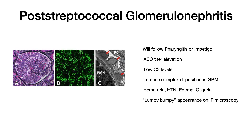Post-streptococcal glomerulonephritis (PSGN) occurs after a Strep pyogenes infection — following either strep pharyngitis or strep impetigo. Labs will show ASO titer elevations and low C3 levels. On immunofluorescent microscopy, you'll see immune complex deposition in the glomerular basement membrane with a classic 'lumpy bumpy' appearance. Symptoms include hematuria, hypertension, edema, and oliguria — all pointing to nephritis and PSGN.